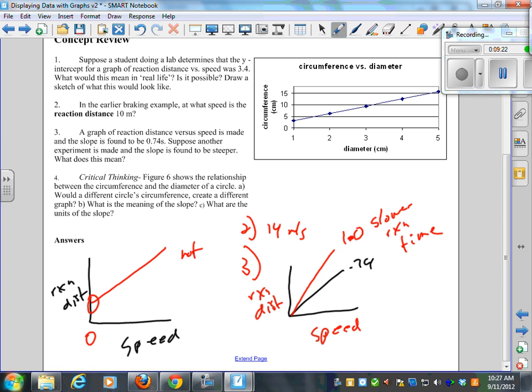So we've got a graph of circumference versus diameter. Would a different circle circumference create a different graph? If I had a different circle, would I get a different graph? Yes. Maybe. Probably not. Alex. No. Explain. Because that's just a guess. The formula, for any circle is always the same. So no matter which diameter, it's going to follow the same story.